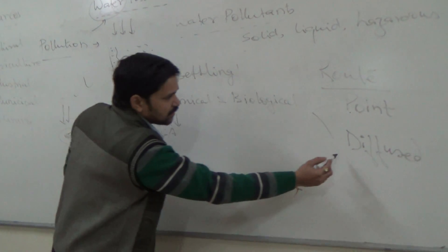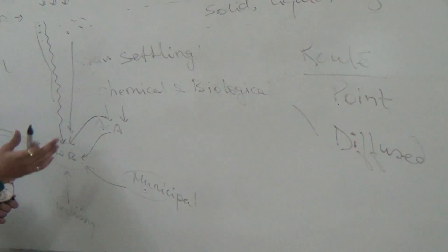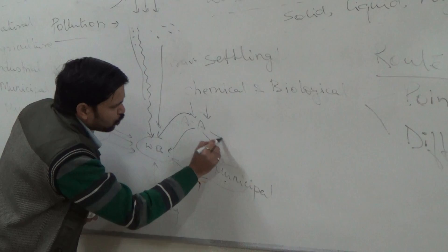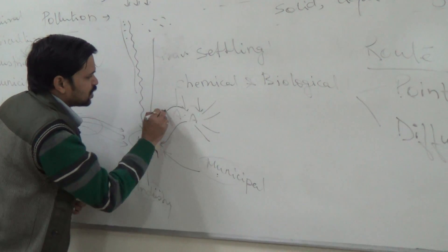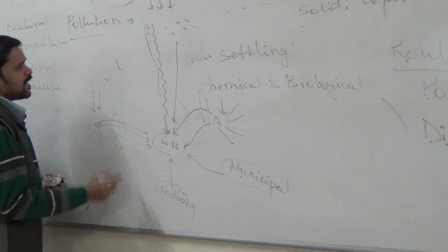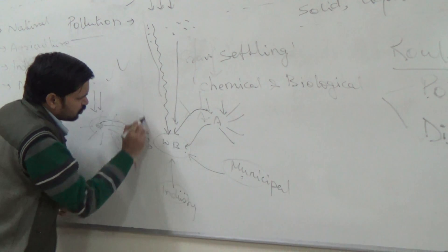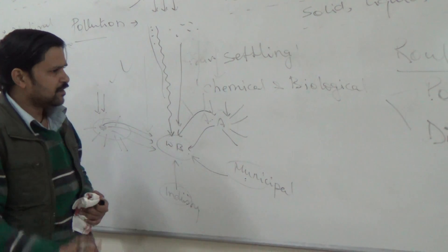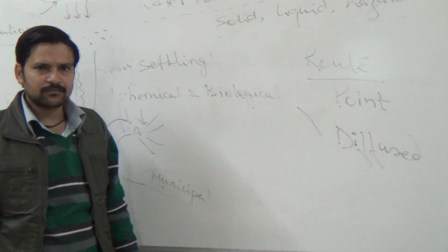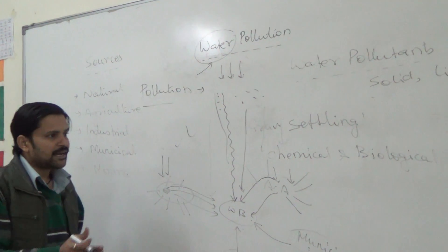Diffused source means the route is unidentified — for example, agricultural material can flow from any side of an agricultural area, natural waste material flows out from any area, and mining particles can settle in various locations. Since the route is unidentified, these are known as diffused sources of water pollution. Today we have discussed water pollution, pollutants, and the sources of water pollution.